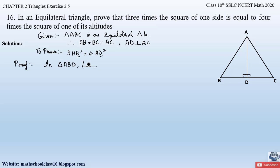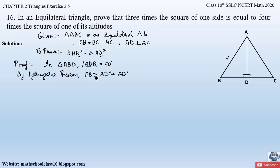In triangle ABD, angle ADB = 90°. Therefore, by the Pythagorean theorem, the hypotenuse AB gives: AB² = BD² + AD². On the left-hand side of what we have to prove we have AB², and on the right-hand side we have AD². Similarly here we have AB² and AD², but we need to remove BD² to arrive at what we have to prove.